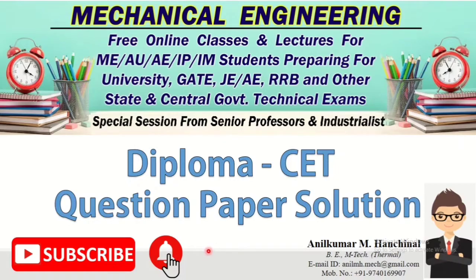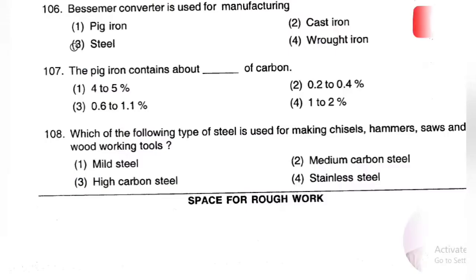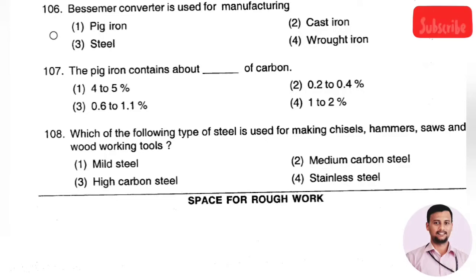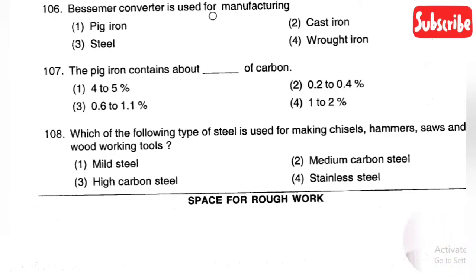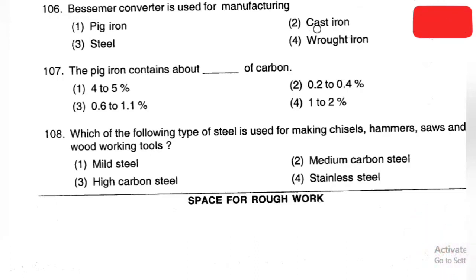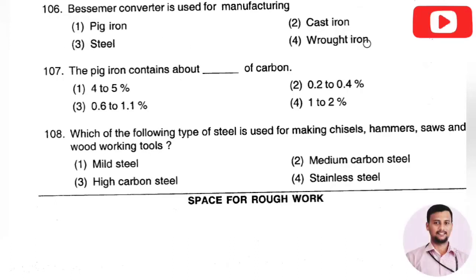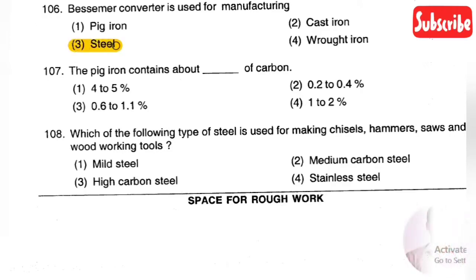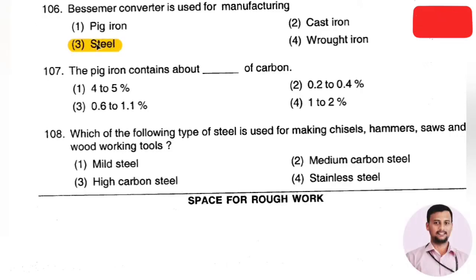The next question: the Bessemer converter is used for the manufacture of — Option 1: pig iron, Option 2: cast iron, Option 3: steel, Option 4: wrought iron. The right answer is Option 3, that is steel.